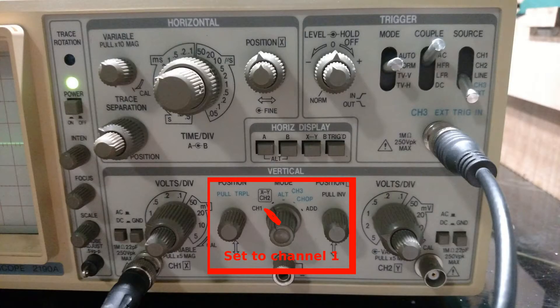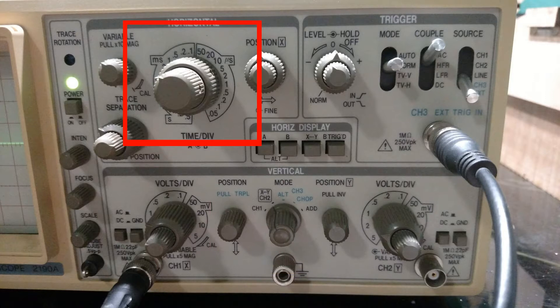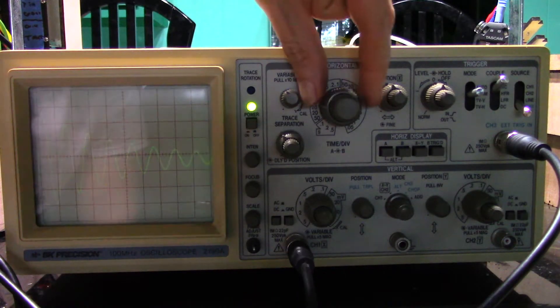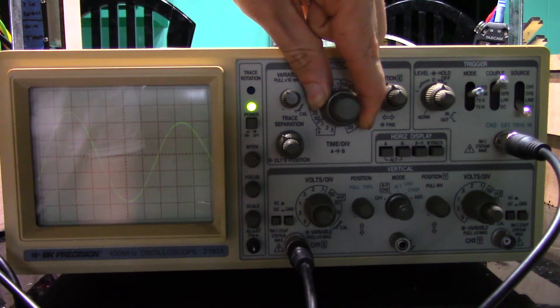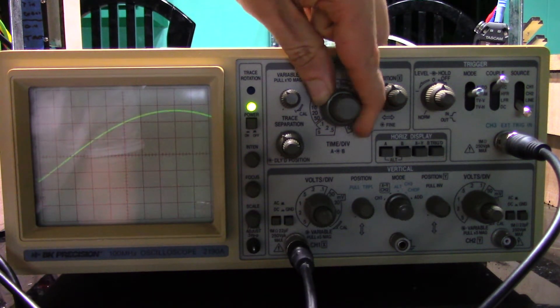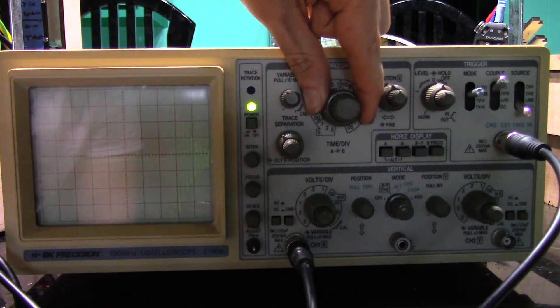Next we make sure that the scope is set to display the channel we were connected to. There should be a knob with different timer intervals. The shorter the time interval, the more zoomed in you are on the waveform. A typical adjustment is the waveform the same width as the screen.